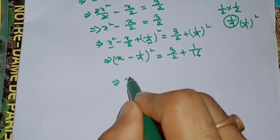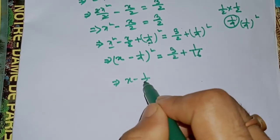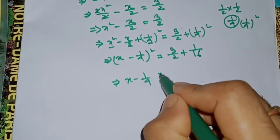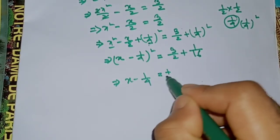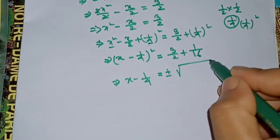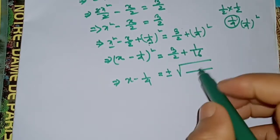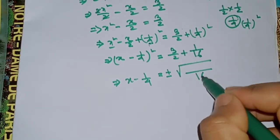x minus 1 by 4, plus or minus root of 1 by 16, or 20 by 16.